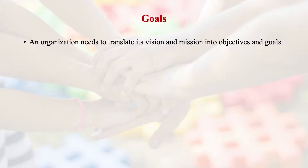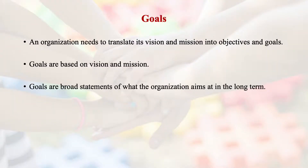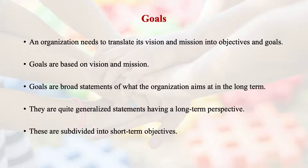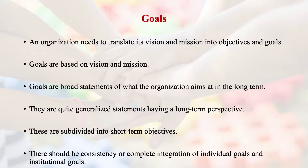An organization needs to translate its vision and mission into objectives and goals. In a strategic plan, goals and objectives are very important aspects. Goals are broad statements of what the organization aims at in the long term — lofty, generalized statements with a long-term perspective — which are broken down into short-term objectives. There should be consistency and complete integration of individual goals and institutional goals, referred to as goal congruence. Sub-goals of an organization must be congruent to achieve one set of objectives.